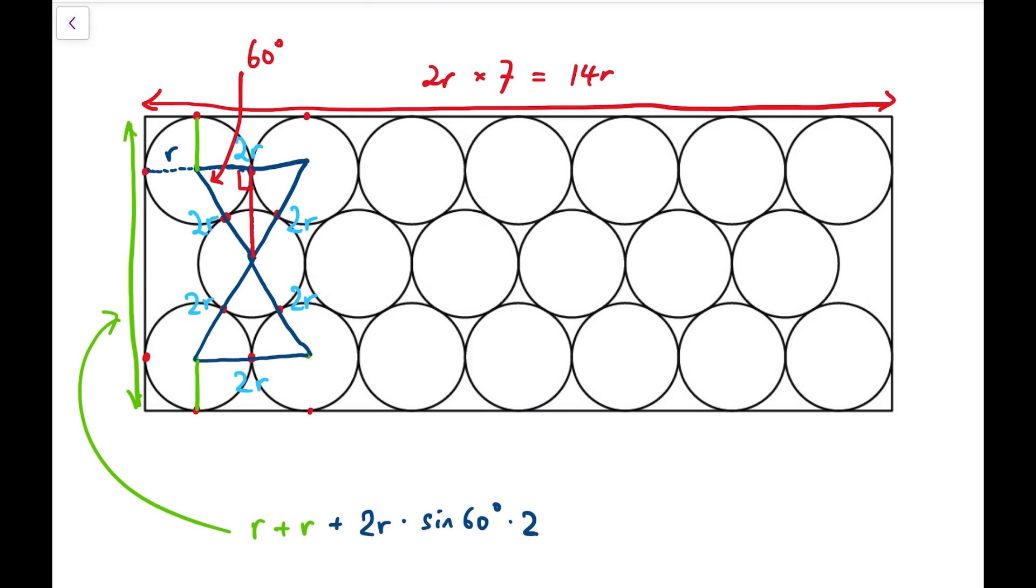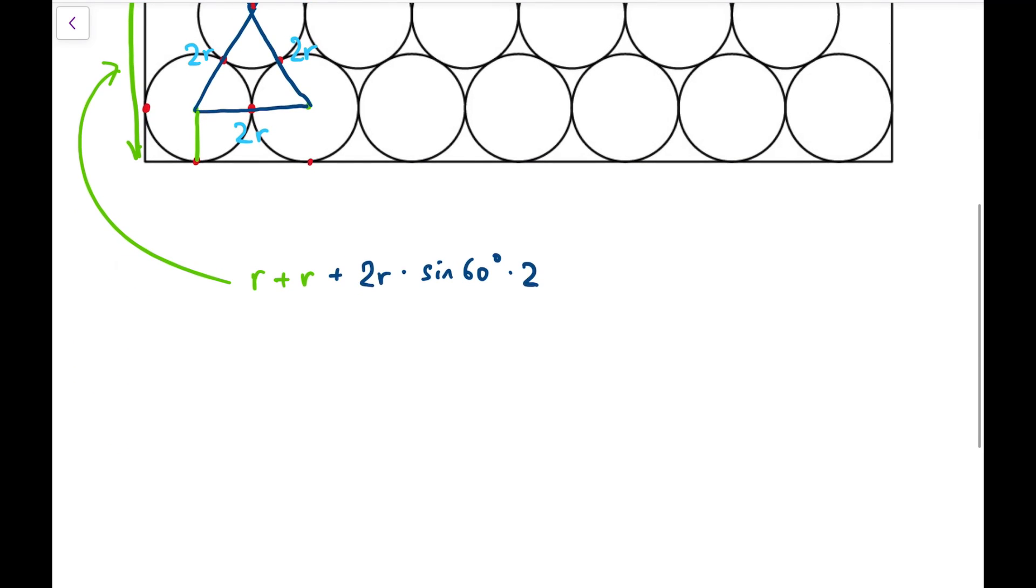So now what remains is to find the ratio between red and green. So our final answer should be exactly 14R divided by 2R plus 4R times sine of 60 degrees. If I remove the R on both numerator and denominator, I will get 14 over 2 plus 4 times sine of 60 degrees. And that is exactly root 3 over 2.